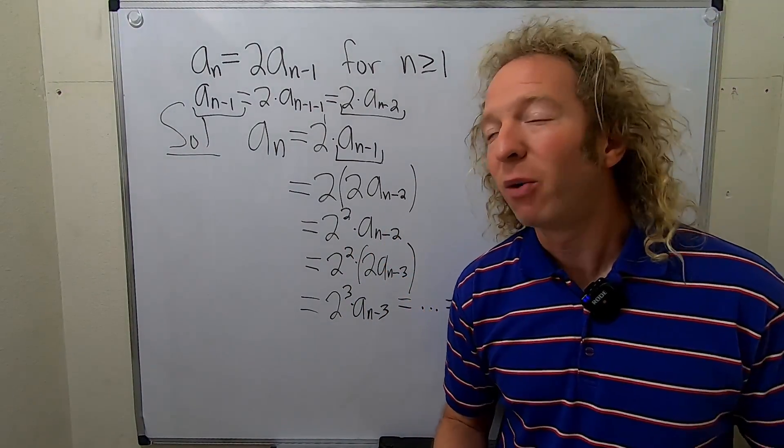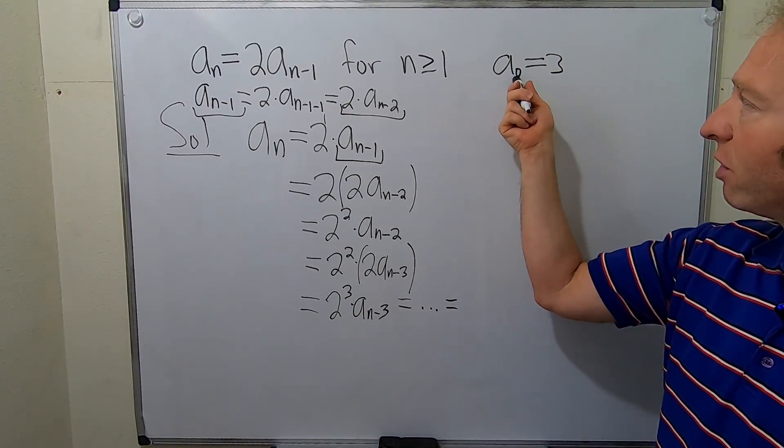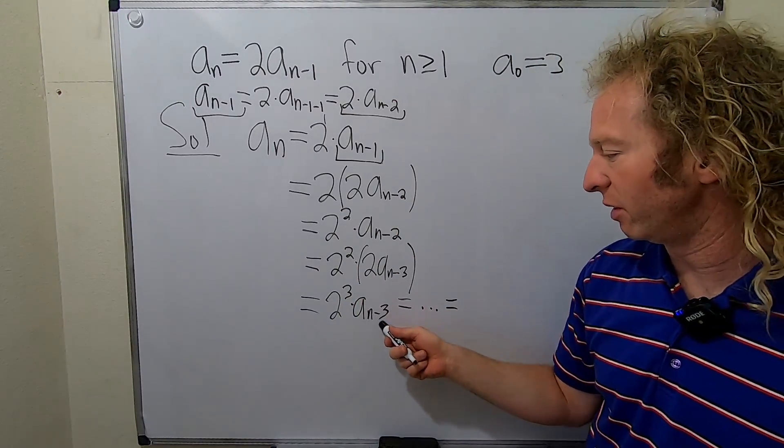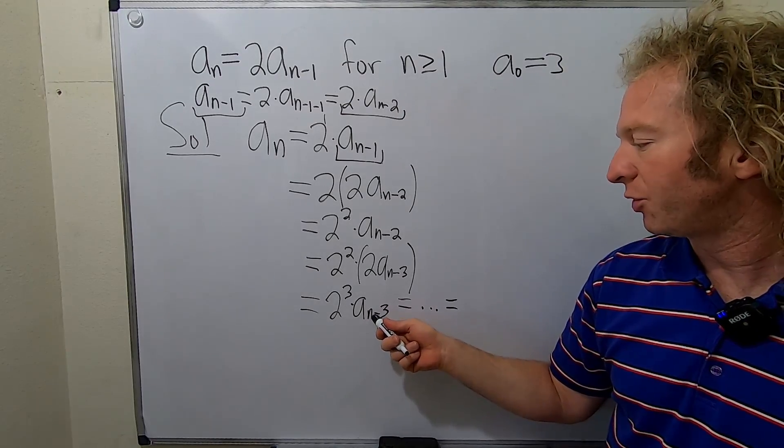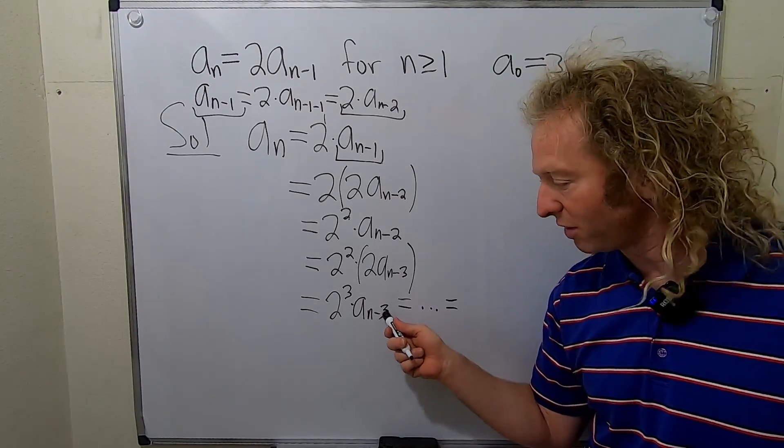And so when do we stop? Well, if you look at your initial condition, there's a 0 here. So you want to get a 0 here. So that will happen when n is equal to n. So n minus n is 0. So you want this to be an n.